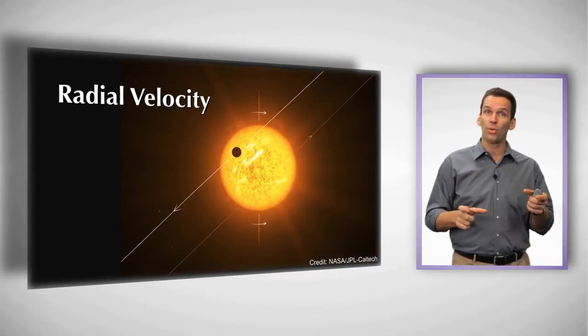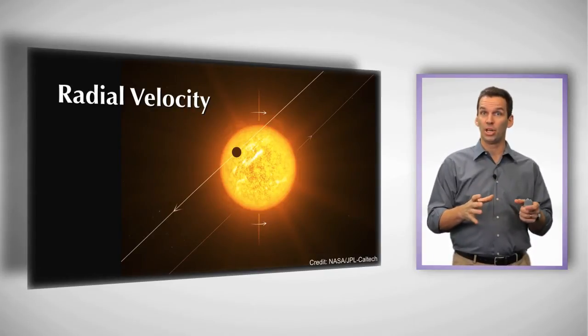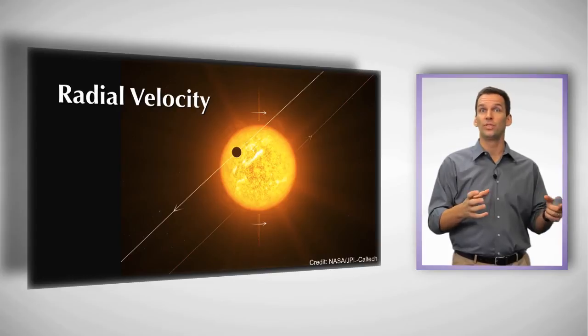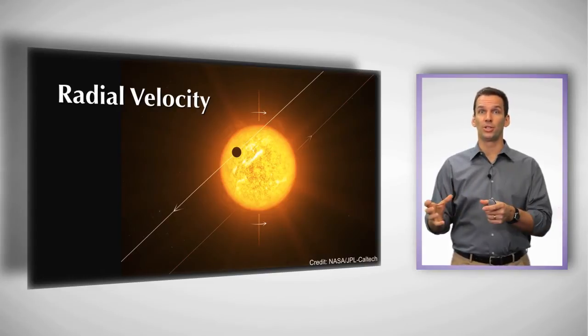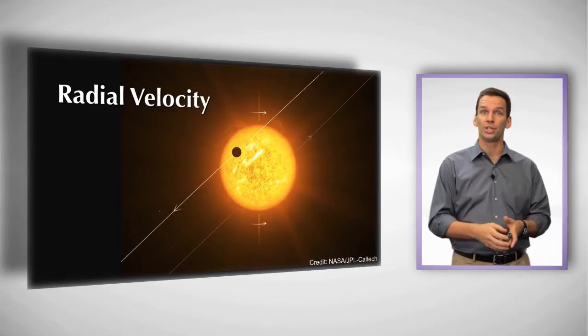Well, the reality is they both orbit around a common center of mass. And because the Sun is so much larger, it moves very little. Jupiter is much smaller and it moves a lot. But nonetheless, both objects move.